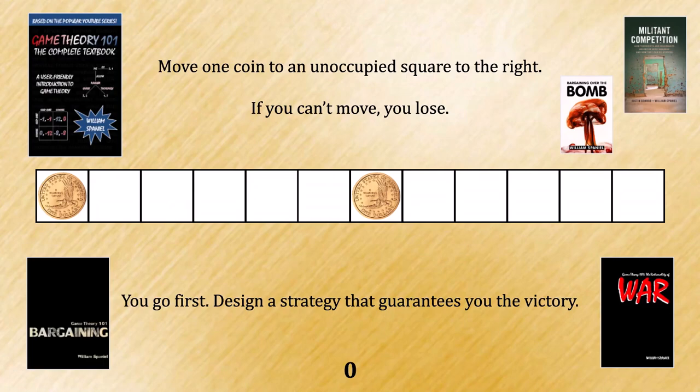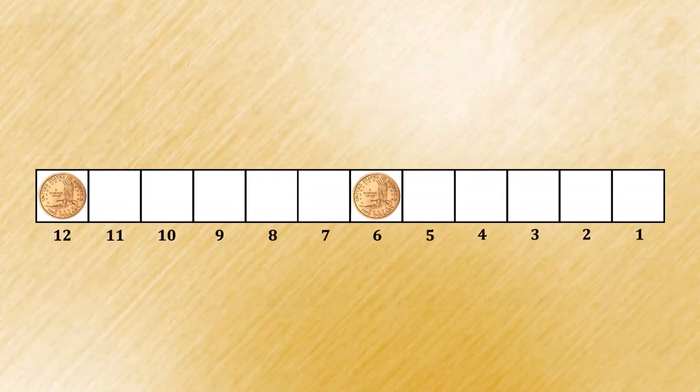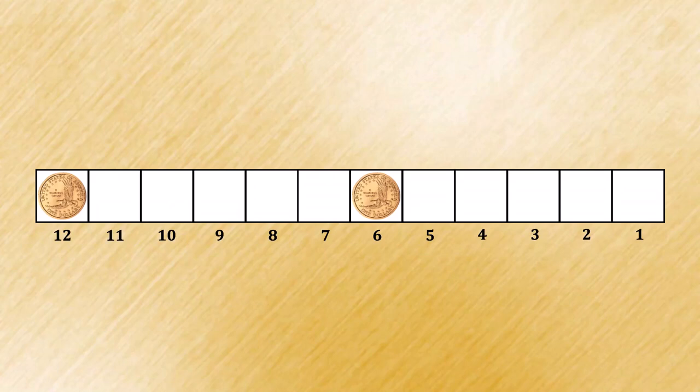Are you ready for the solution? If not, here's another hint. Your opening move should take the coin currently on square 12, and place it on square 5. Do you see why?